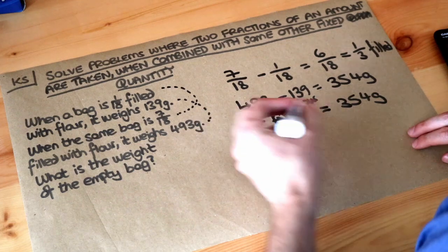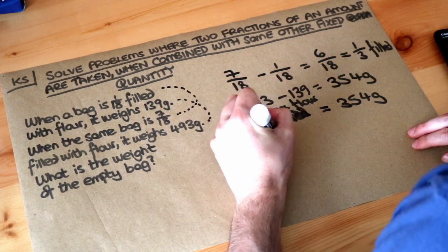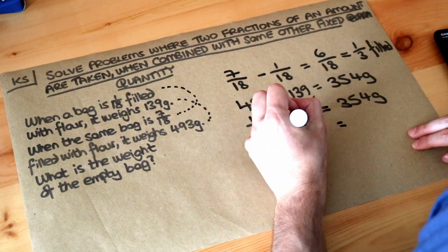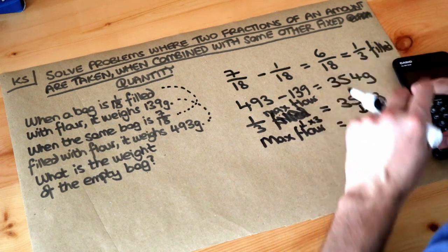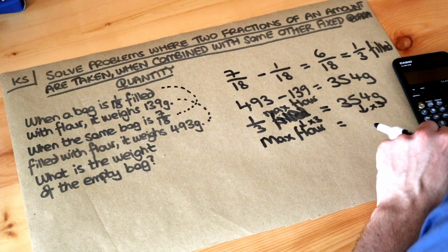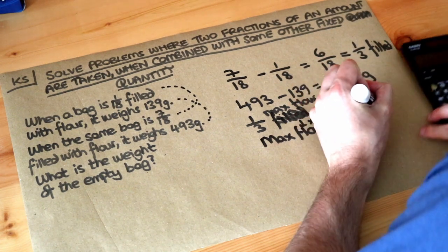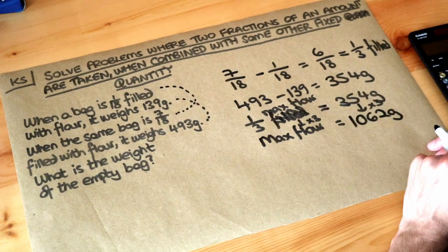Now we could at this point find the total amount of flour if the bag was fully filled. So the maximum amount of flour, if we times this by 3 because we had a third filled, times that by 3. So 354 times 3 is 1062. So that's the amount of flour we would have if the bag was fully filled.